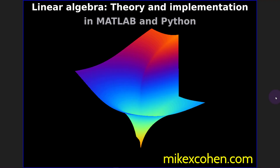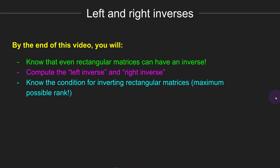In previous videos, I told you that only square matrices have an inverse. Technically, that's true and there's no getting around it. But certain rectangular matrices can have what's called a one-sided inverse — a matrix that can multiply another matrix to produce the identity matrix, but only when it multiplies on one side. In this video, I will explain how to compute this one-sided inverse, typically called the left inverse or the right inverse, and the conditions required for having one.